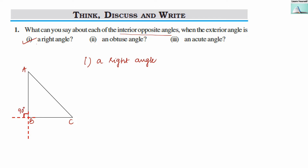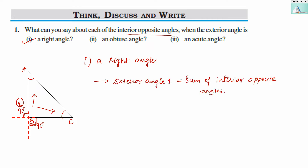The exterior angle is 90 degrees. The interior opposite angles are angle A and angle C. We know that the exterior angle — I am denoting it as angle 1 — has the property that angle 1 equals the sum of the interior opposite angles. So if angle 1 measures 90 degrees, then it equals angle A plus angle C.